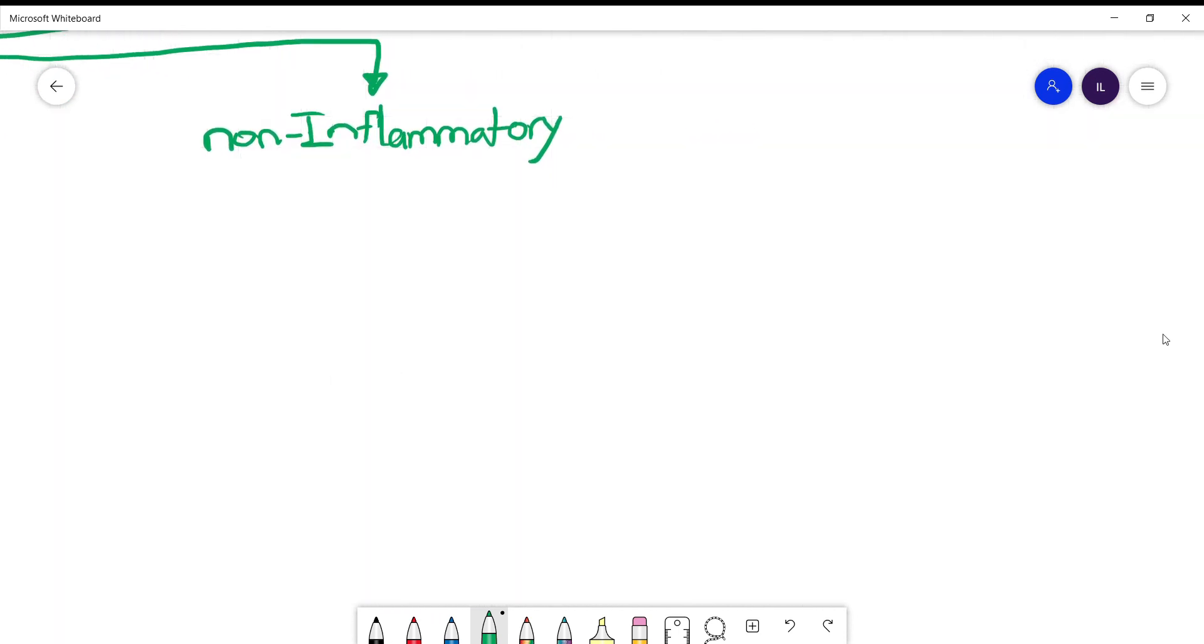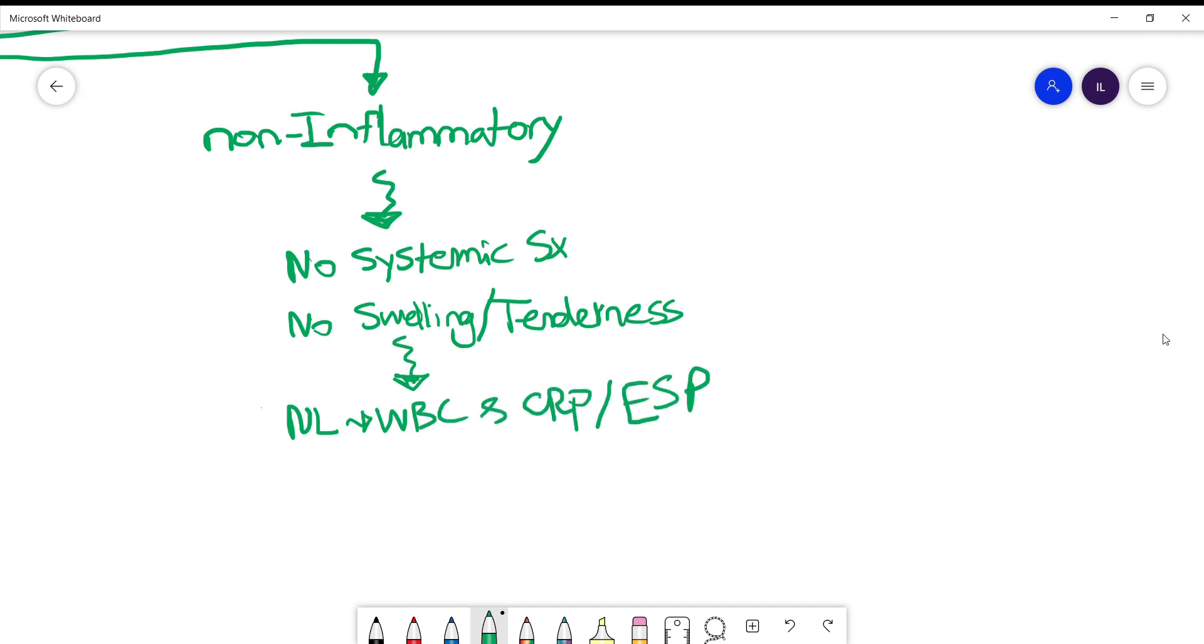Now talking about the non-inflammatory articular diseases, these people will not have any systemic symptoms because there is no inflammation, and also there will be no swelling or tenderness on examination. The reason is there is no active inflammation in the joint. In the labs they will have normal white count and normal inflammatory markers, and the main two examples are osteoarthritis and hemochromatosis arthropathy.